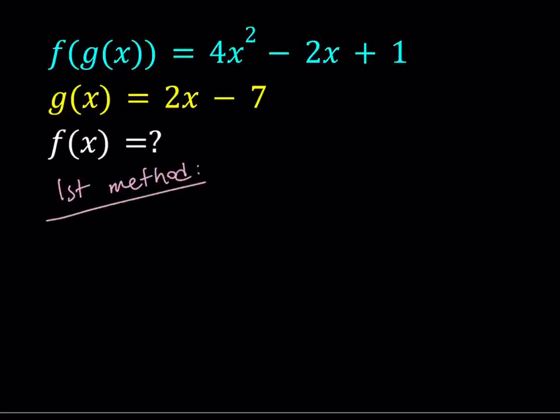My first method, pretty much as always the more painful method, involves the following. f of g of x was written as a function of x, but I would like to write it as a function of g of x, so from there I can kind of extract f of x.